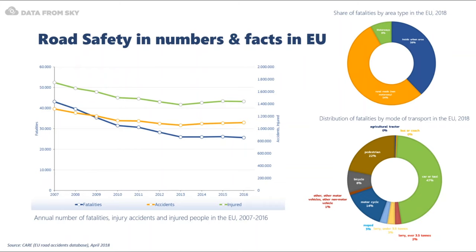First of all, why are we talking about safety? The European Union has some of the safest roads in the world. Nevertheless, more than 25,000 people still lose their lives on EU roads every year. This is an enormous loss. On the other hand, there is a decrease of 21 percent compared to the year 2010. In overall, only 8 percent of road accident fatalities occurred on motorways, whereas 54 percent happened in rural areas and the rest in urban zones.